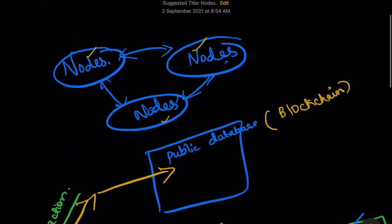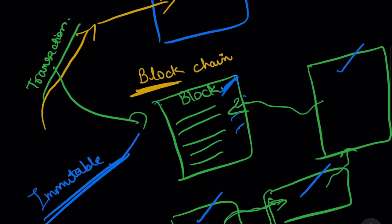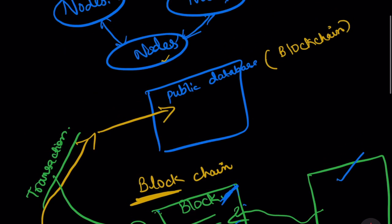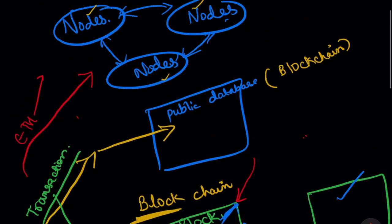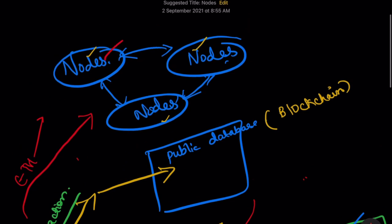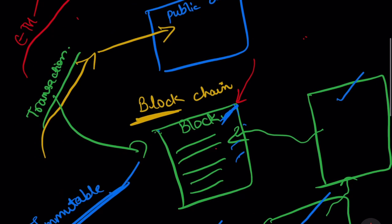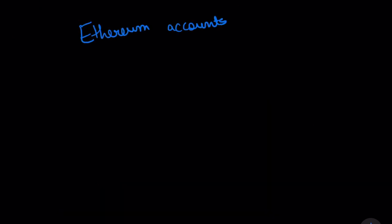Whenever you send a transaction to the network — for example sending ETH to a friend — a miner has to include it in one of the blocks, and all nodes independently verify whether it is correct. If correct, this becomes part of the blockchain. Let's talk about Ethereum accounts. There are two types: one is an externally owned account (EOA), and another is a contract account.